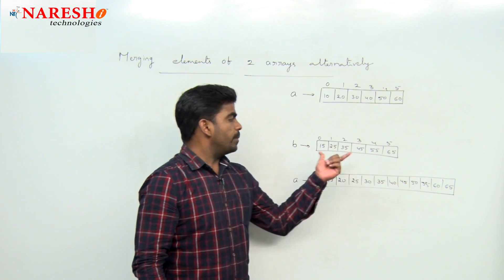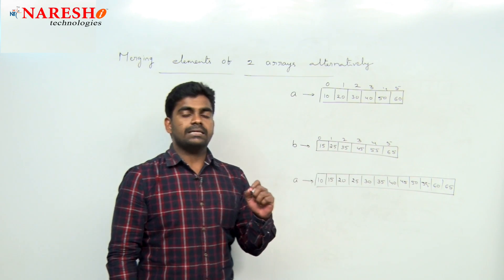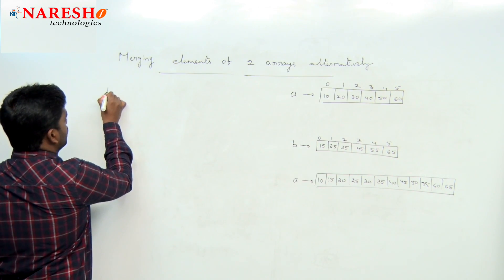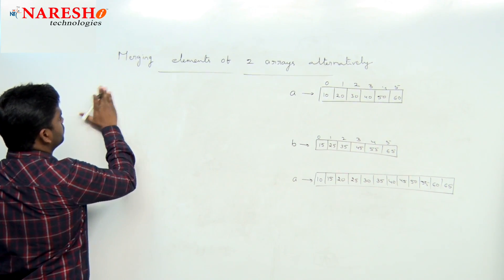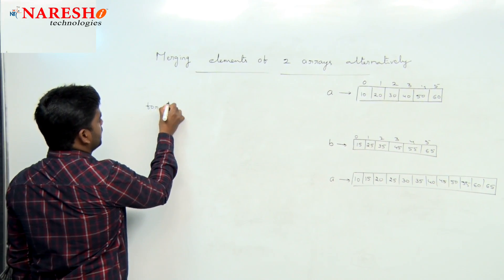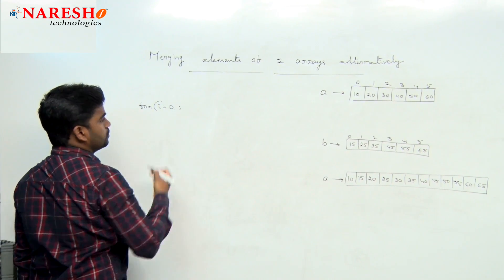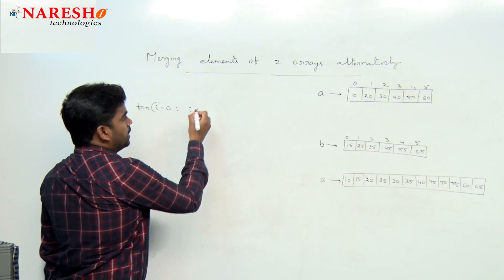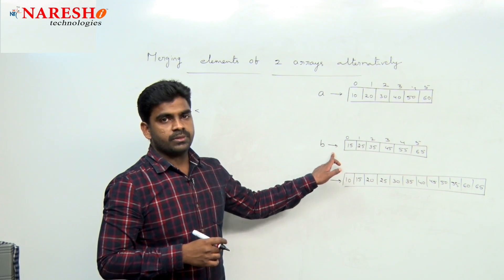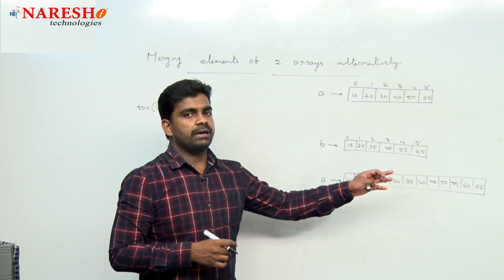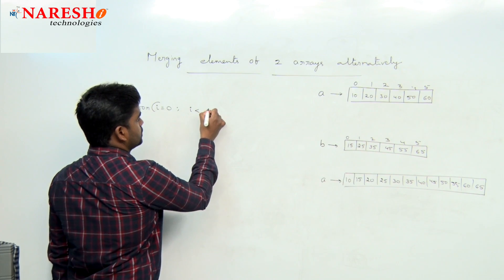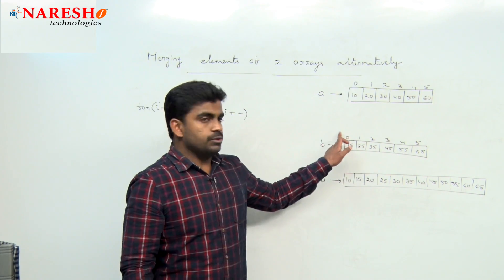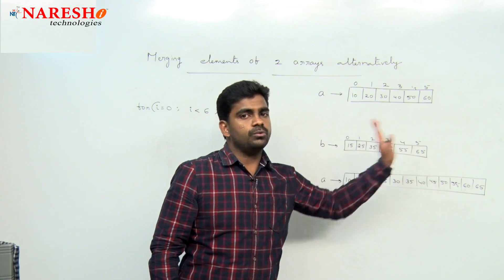Totally how many elements do we need to insert? Total 6 elements. So we are taking one loop — this is the logic. A for loop: i starts with 0, i is less than the size of b (which is 6), i plus plus. Because the index starts from 0 to 5.